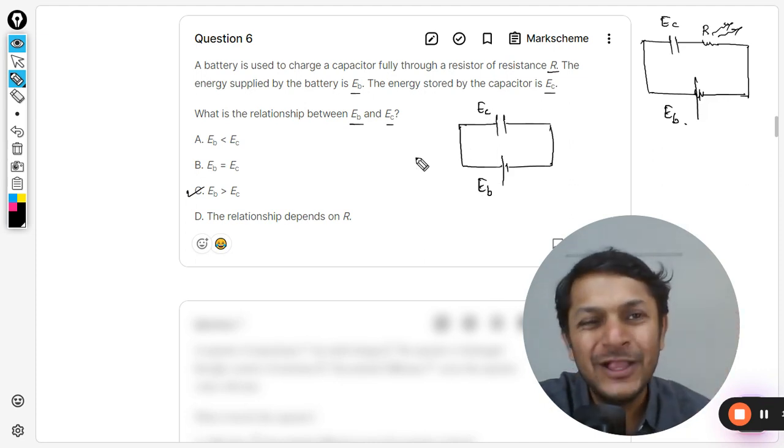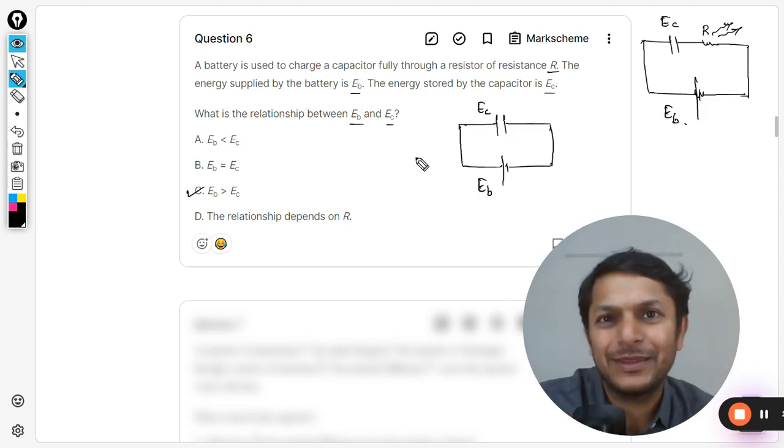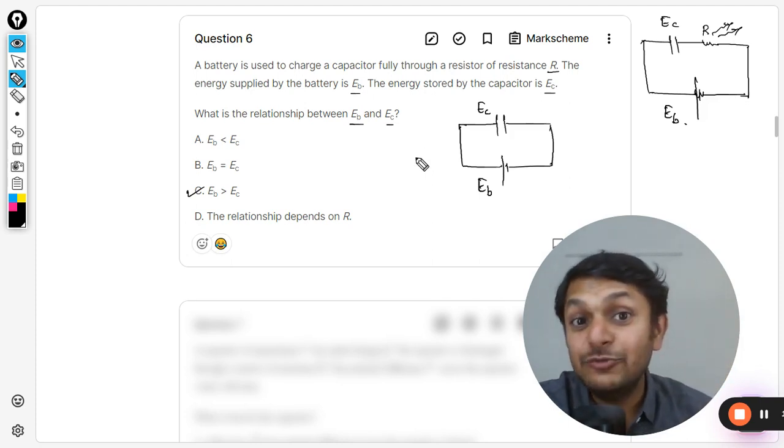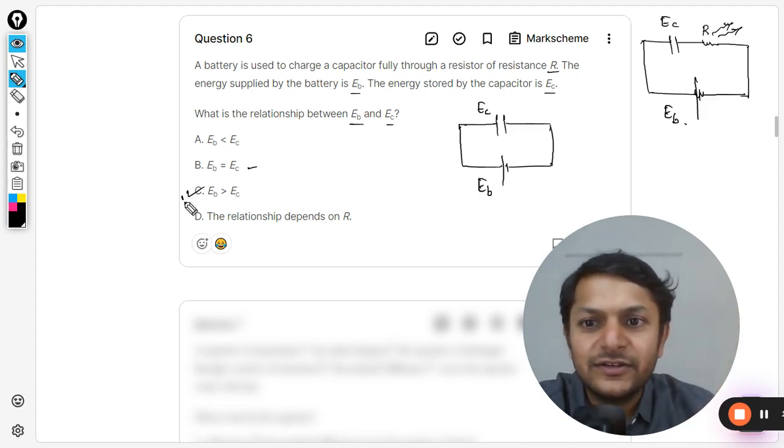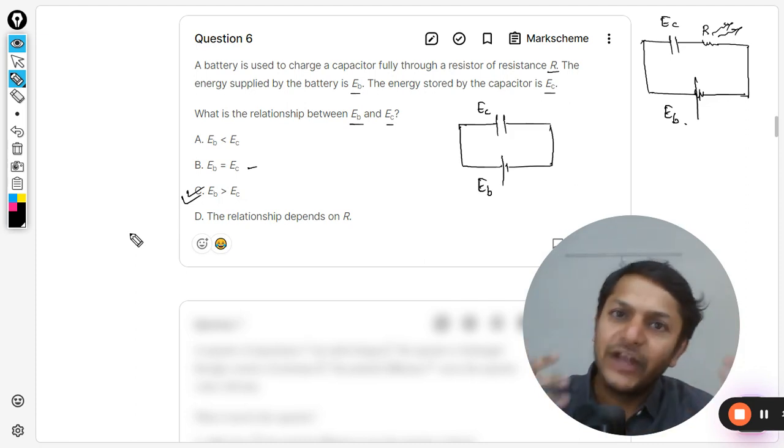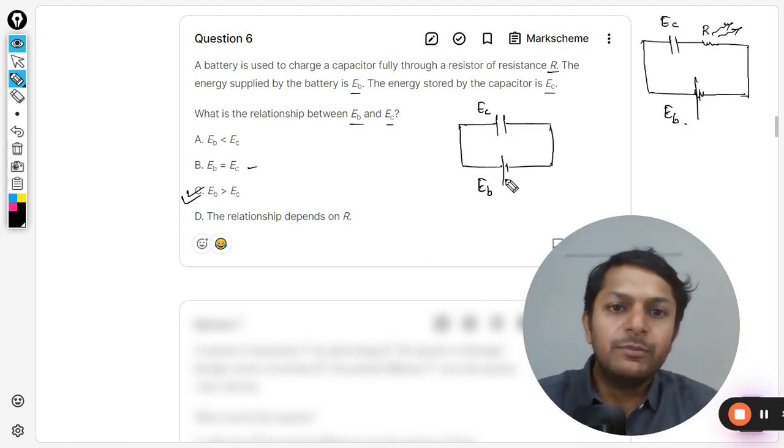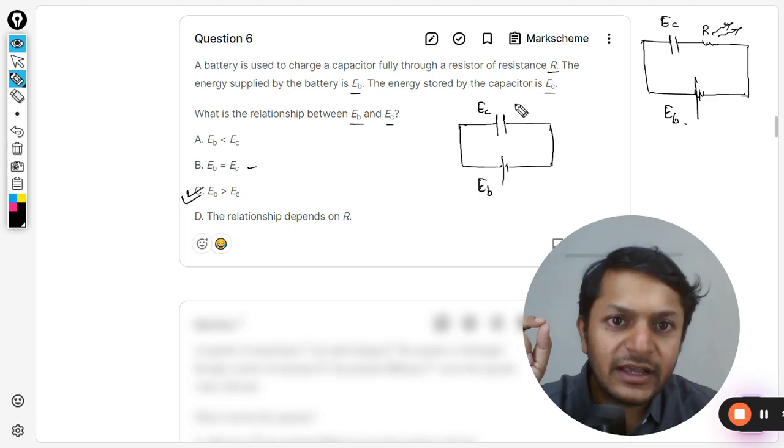What will be your answer now, because resistance is not here? In this case you might feel that Eb will be equal to Ec, but even in this case that is not correct. The correct answer will be C even without the resistance.